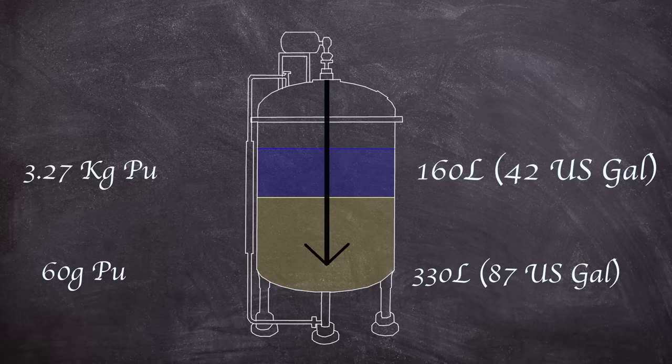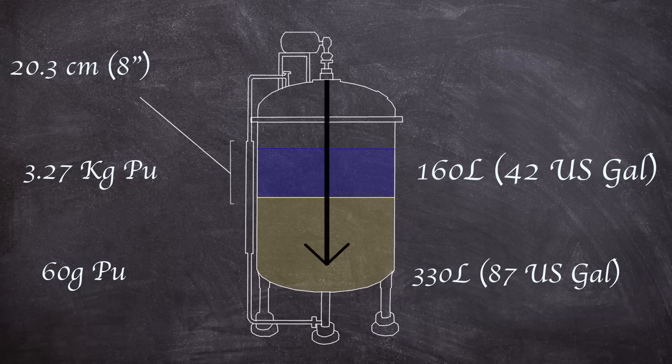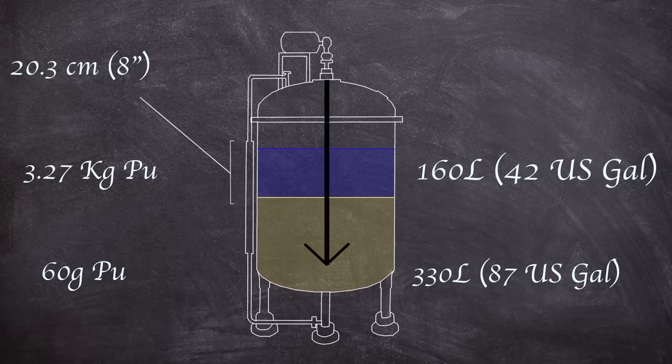A critical mass was not achieved at this time with the two layers being separate. The top layer was 20.3 centimeters thick and criticality would have been achieved by a thickness of 21 centimeters.